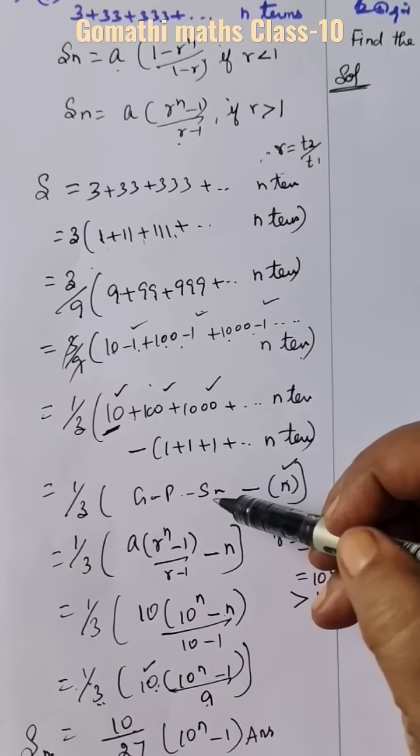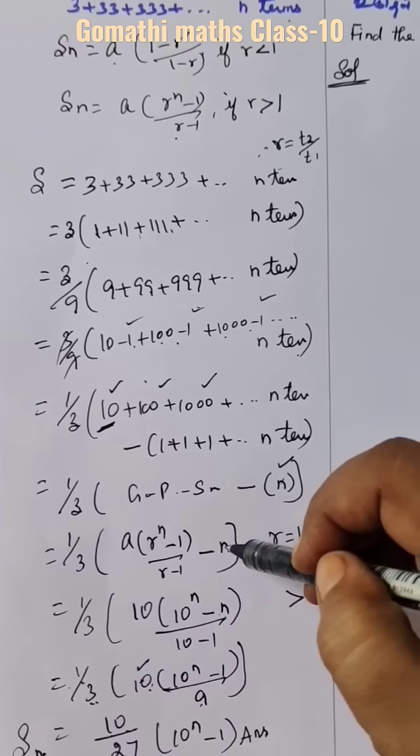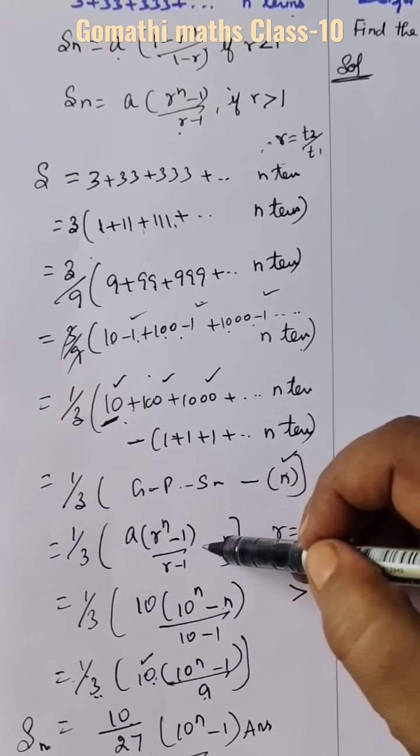This is GP. 1 plus 1 plus 1 is n. Here, minus is minus here.